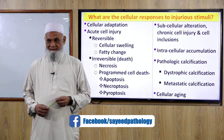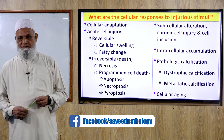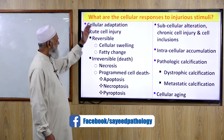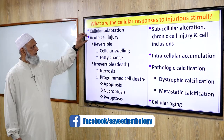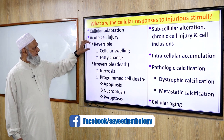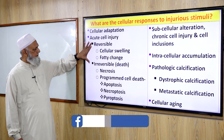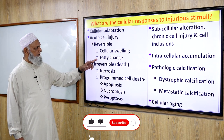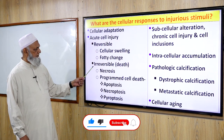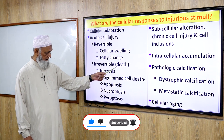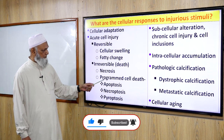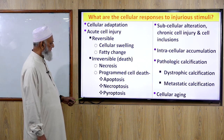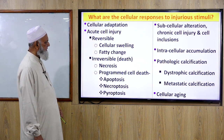What are the cellular responses to injurious stimuli? These include cellular adaptation, acute cell injury — which divides into reversible and irreversible types. Reversible cell injury includes cellular swelling and fatty change. Irreversible cell injury or cell death includes necrosis and programmed cell death — apoptosis, necroptosis, and pyroptosis.